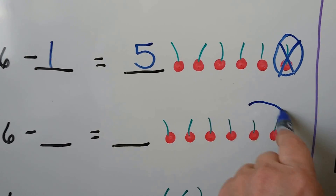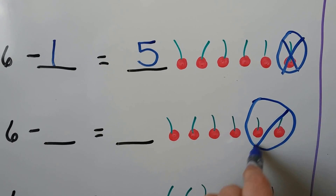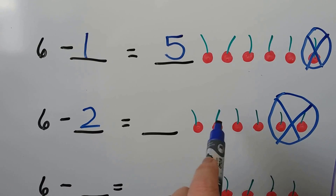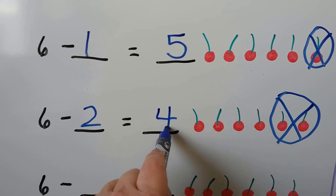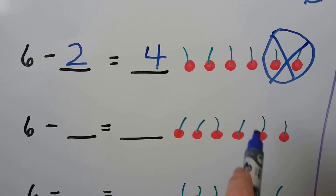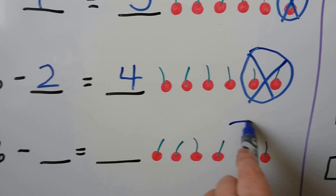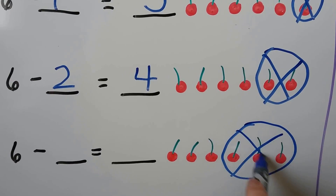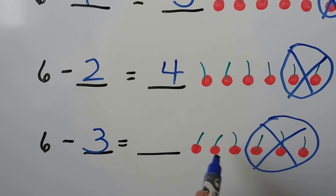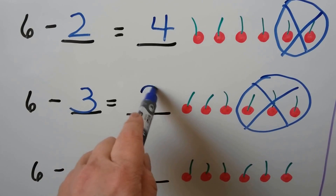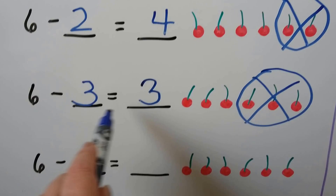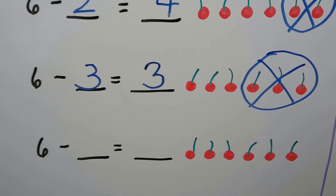We can take two cherries away. There'll be one, two, three, four left — four left for Emma and her sister will get two. We can take three cherries away and there are one, two, three left. Then Emma gets three and her sister gets three. They get the same amount, don't they?